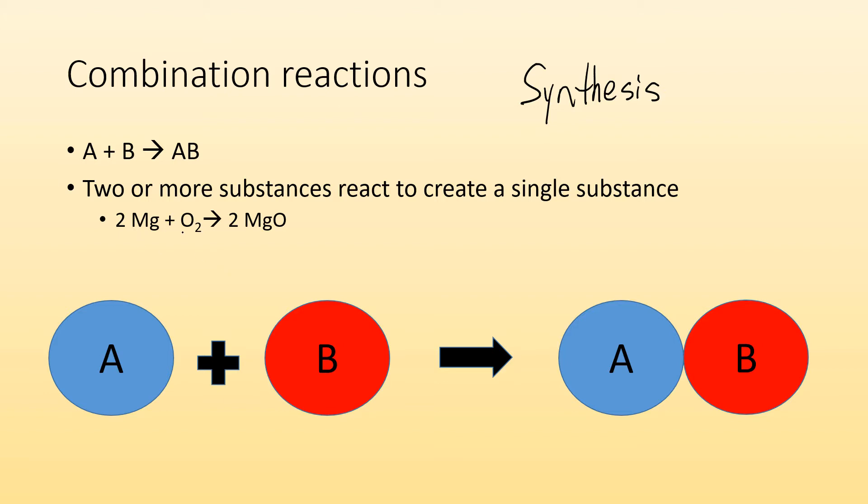An example would be like magnesium reacting with oxygen to give me magnesium oxide. Sodium and chlorine reacting to give me sodium chloride. We have two different substances reacting to give us one new substance. So that's a combination reaction.